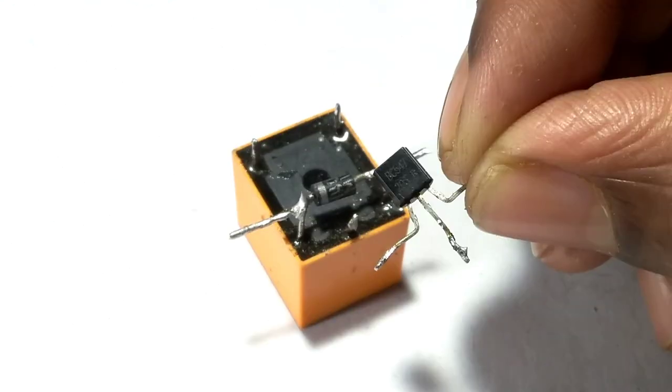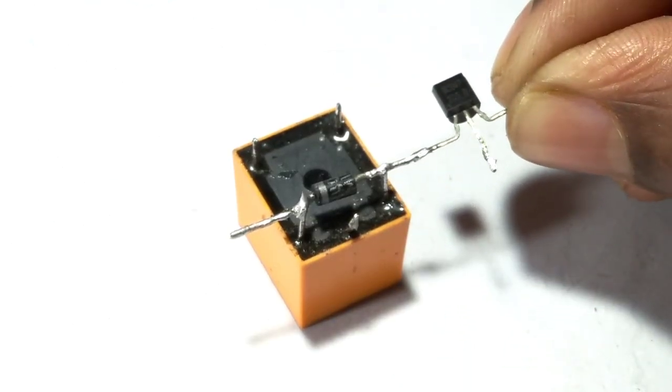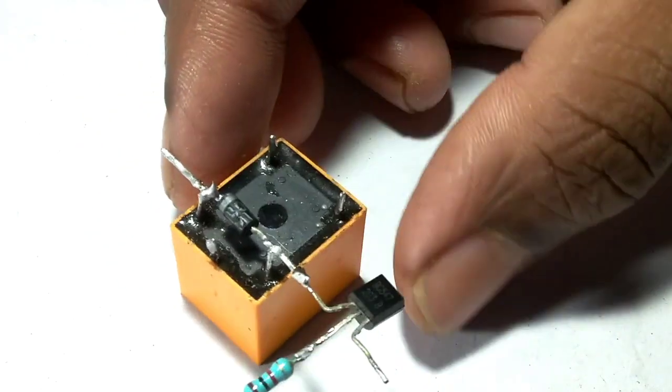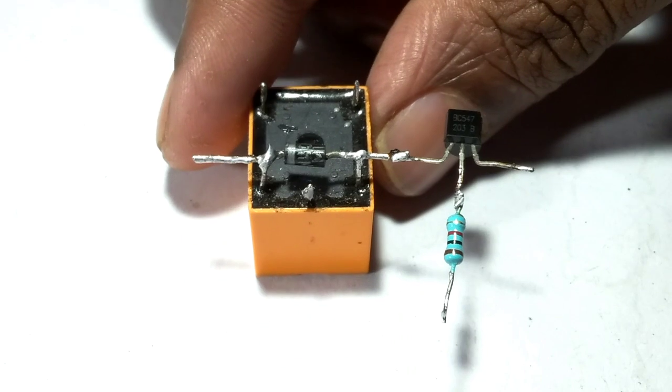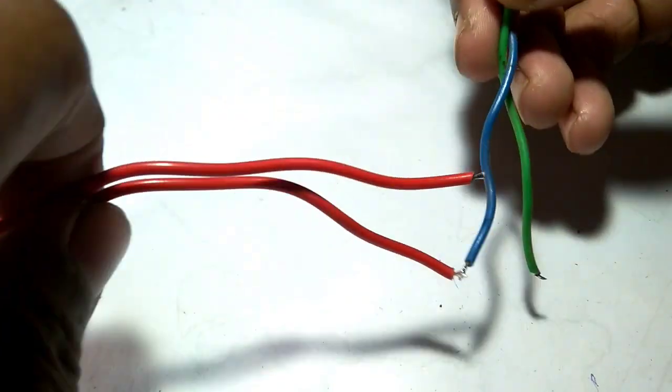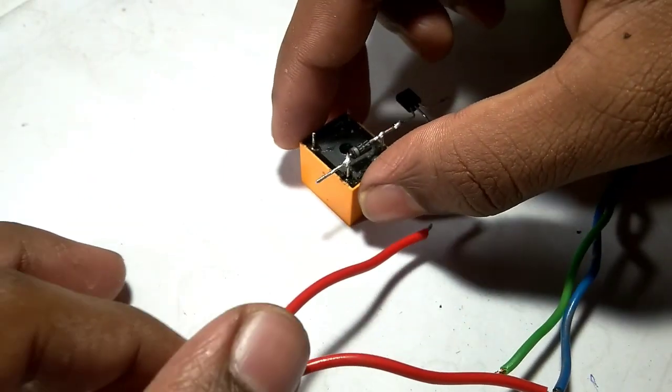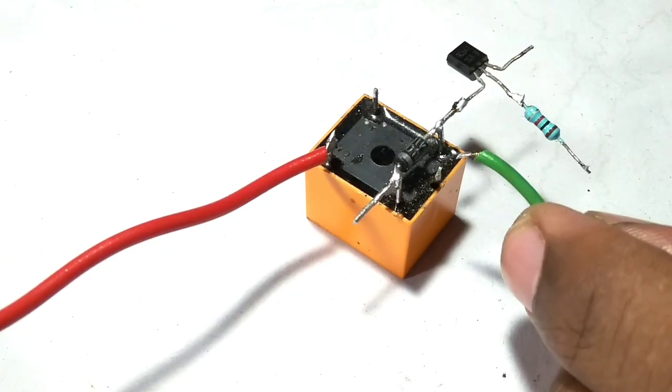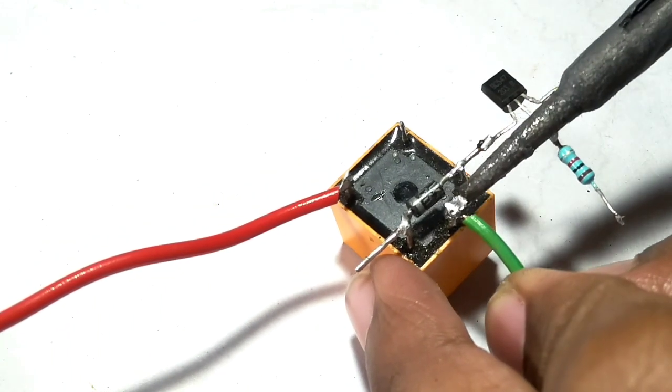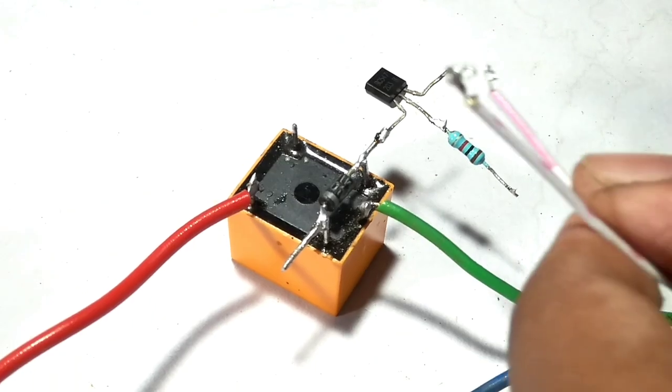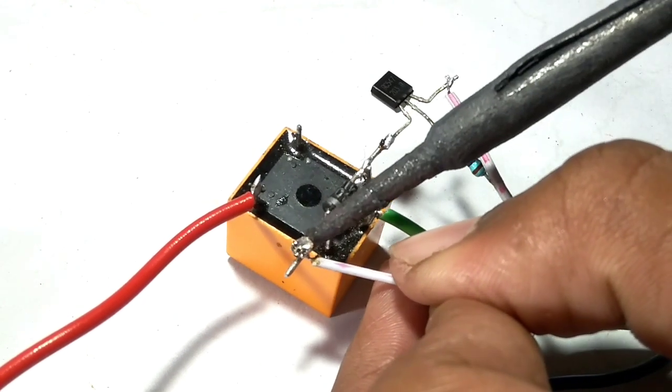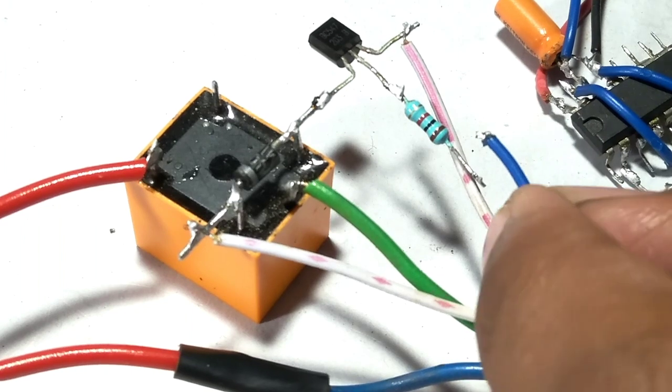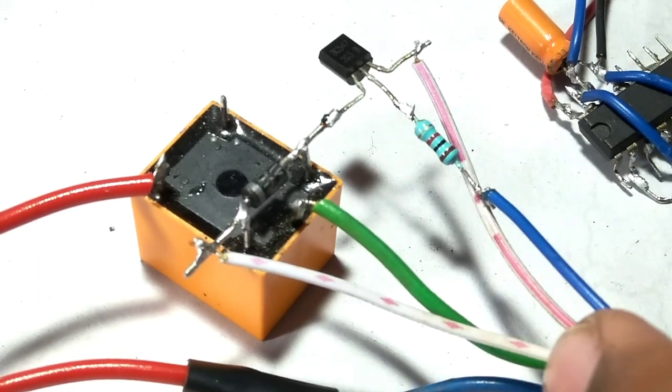Then I connect the AC wires. For powering the relay module, I connect the AC wire to the IC's pin 2 and the relay module's common pin. I connect the AC plug to the circuit.